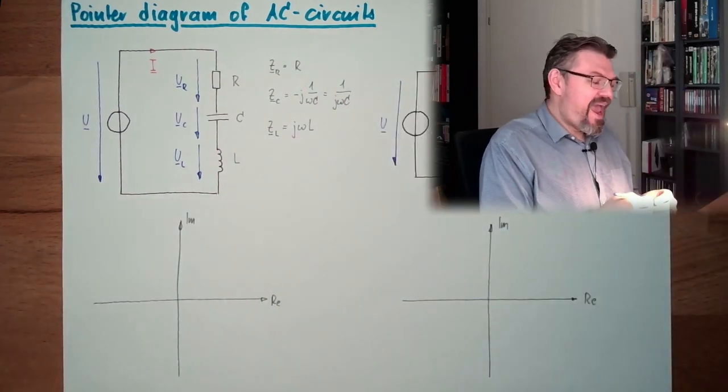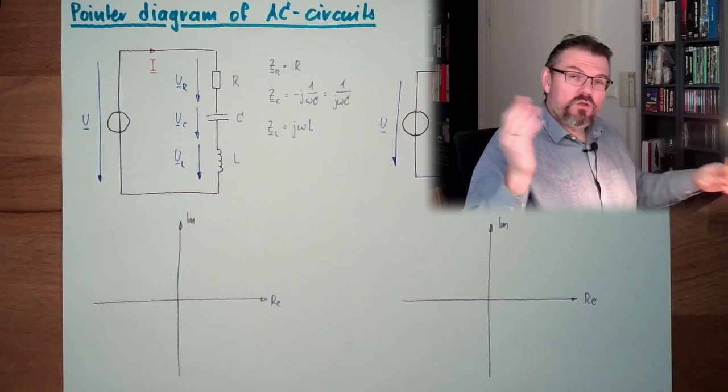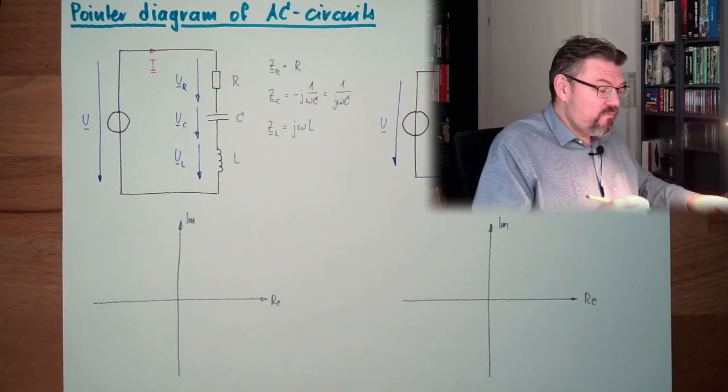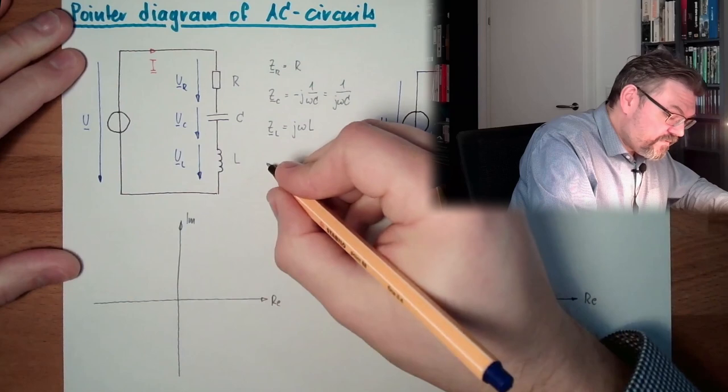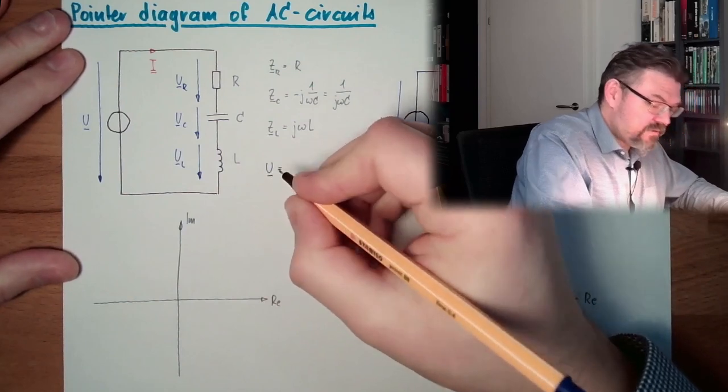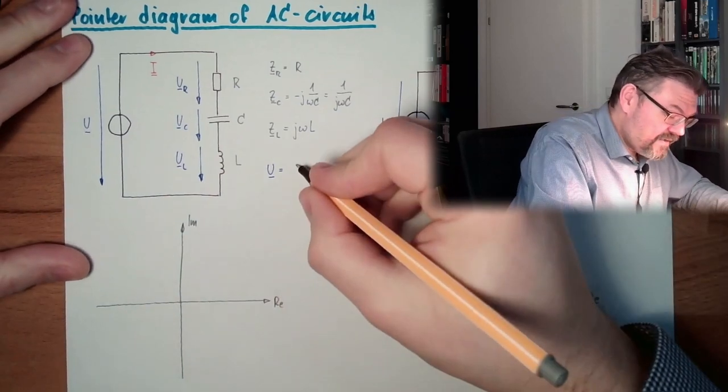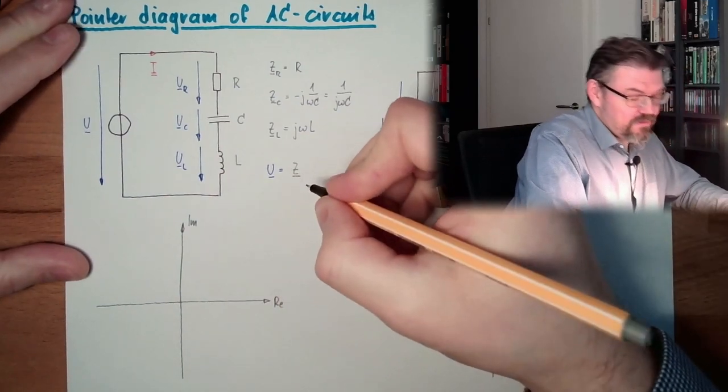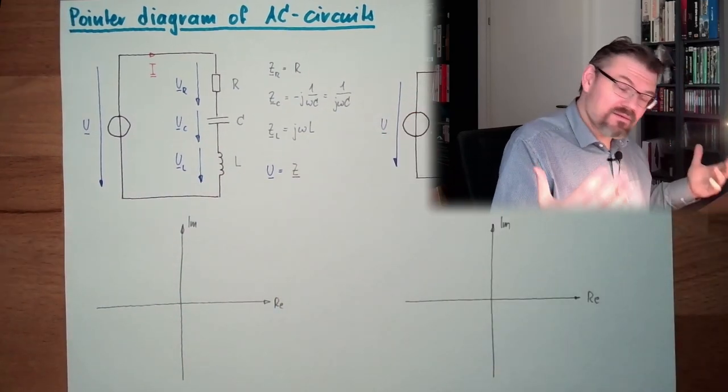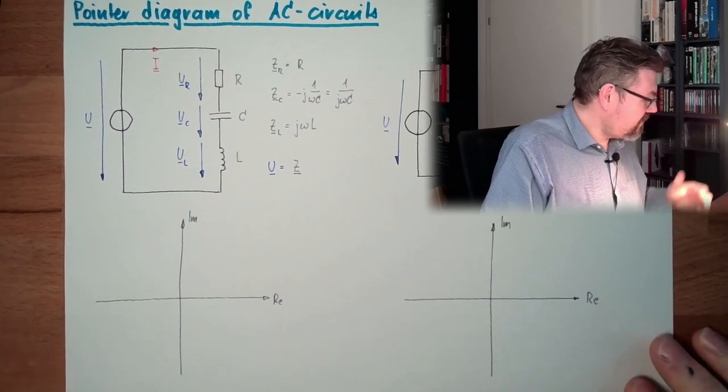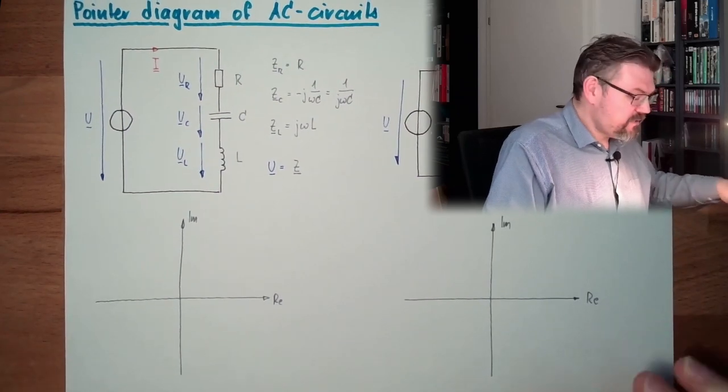And of course, this Ohm's law for alternating current was also available. So this was U equals, and now it's the AC complex resistance, the impedance times I.